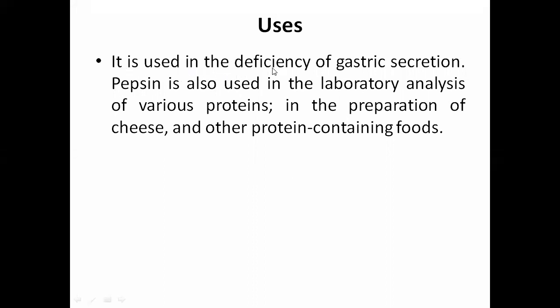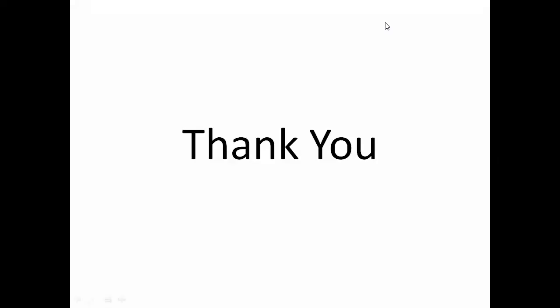Pepsin is used in the deficiency of gastric secretion, where people who do not secrete sufficient pepsin have digestive issues and can take it as a supplement. It is also used in laboratory analysis for various proteins, in the preparation of cheese and other protein-containing foods, and is available in pepsin syrup for those with digestive issues. Since protein is an important part of the diet, sufficient pepsin secretion is essential, and substitutes must be taken when there is a deficiency.